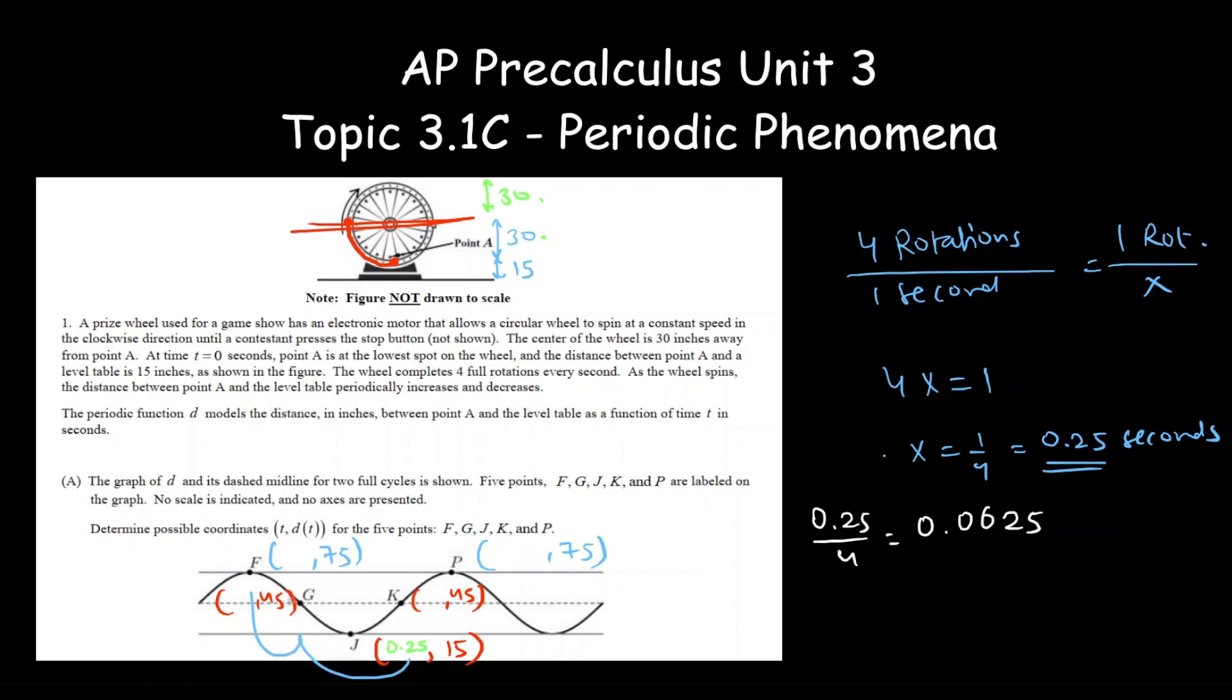So I can just write over here so that the coordinates of G will be 0.25 minus 0.0625 comma 45, and the coordinates of F will be 0.25 minus twice of 0.0625, which is 0.125. So 0.125 comma 45.